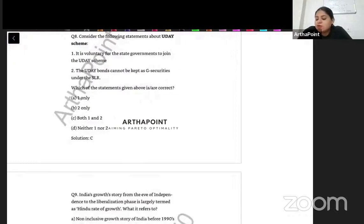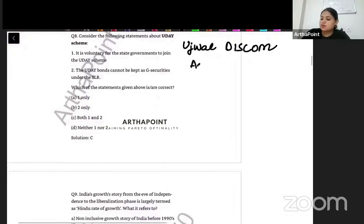Okay, come to the next part. Consider the following statements about Uday Scheme. It is voluntary for state governments to join the Uday Scheme. The Uday Bonds cannot be kept as G-Securities under the SLR. So Uday Scheme is basically Ujwal Discom Assurance Yojana.